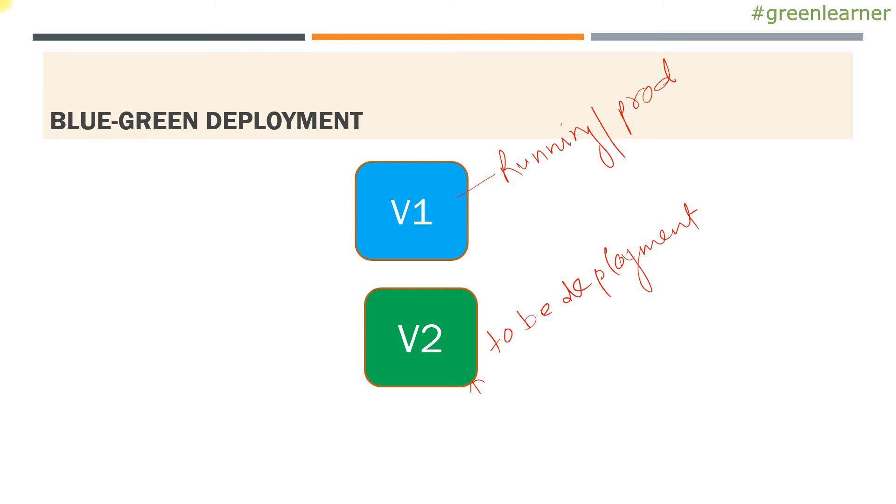To replace version 1 and take the version 2 into production, you have two conditions. First one is no downtime. Second one is rollback should be easy. How you can do this?